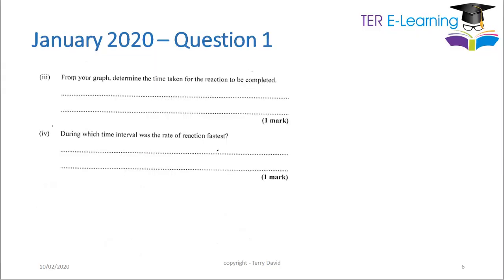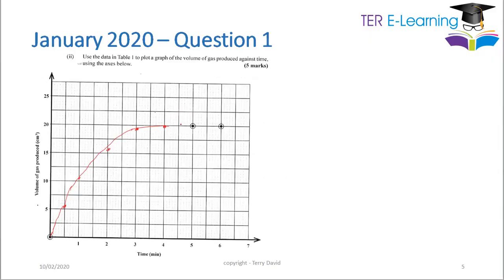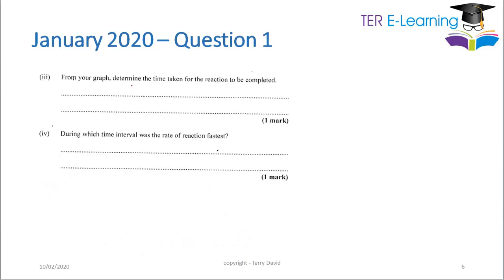The next part asks: from your graph, determine the time taken for the reaction to be completed. When the reaction is complete, no more hydrogen gas is being produced. At four minutes we have 20 cm³, at five minutes 20 cm³, at six minutes 20 cm³ — we're not producing any more hydrogen gas. Therefore the time taken for the reaction to complete is four minutes.